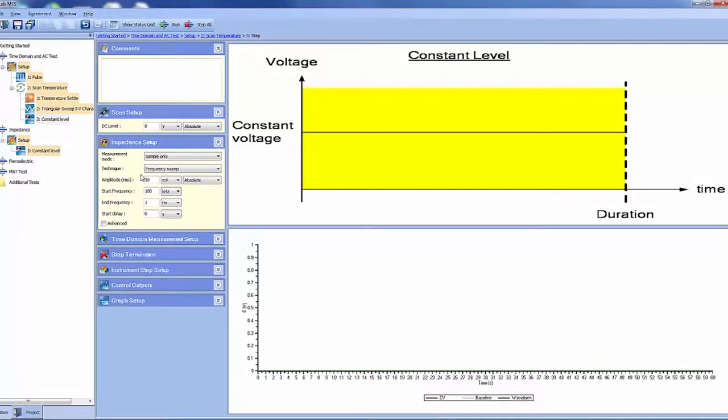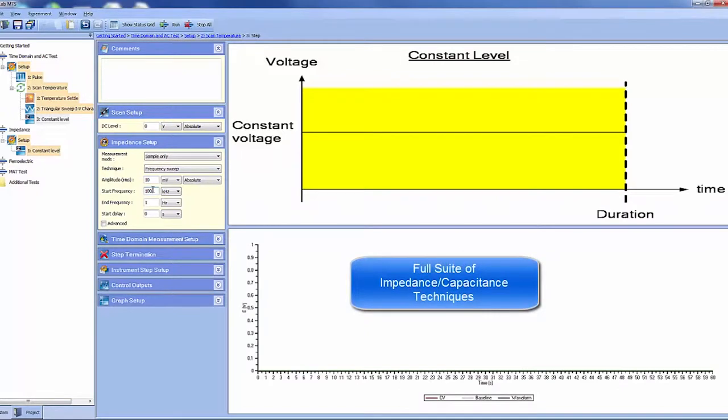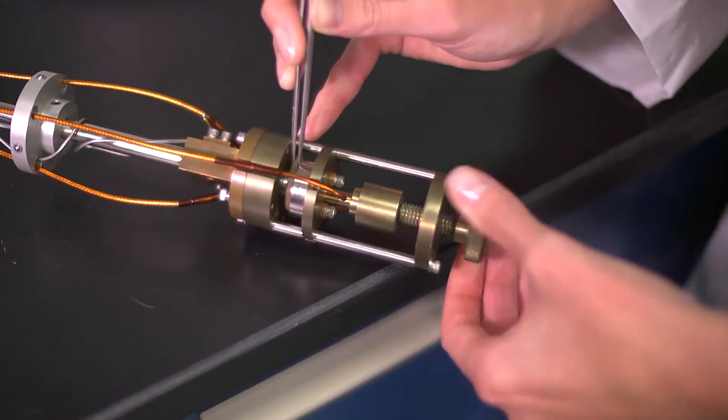Modulab XM software is a next generation approach in materials characterization software with an advanced user interface, data presentation and analysis. Modulab XM provides you with all the tools from the beginner to the advanced research scientist across a wide range of applications and techniques.